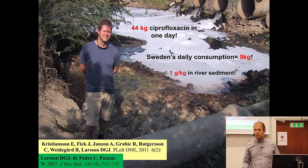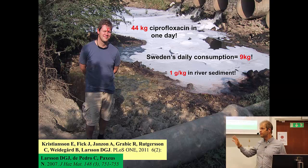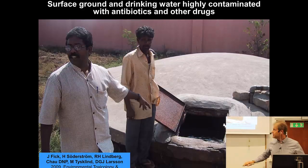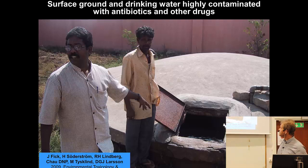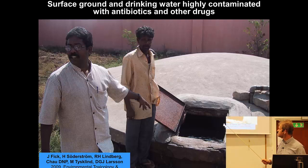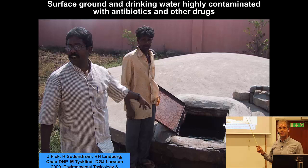We've also looked at the well waters, the groundwater in surrounding villages. In all of the villages here, we found highly elevated levels of different drugs, including antibiotics — not milligrams, but microgram per liter levels of drugs in their drinking water. And these poor people don't have much in the way of other water sources to turn to.